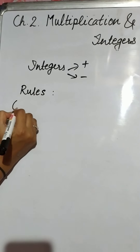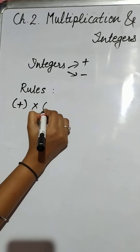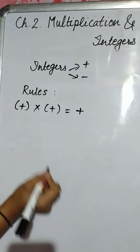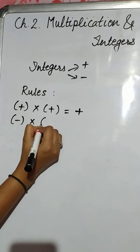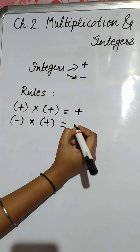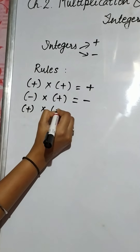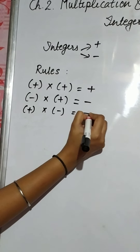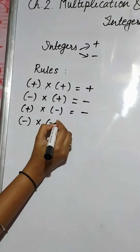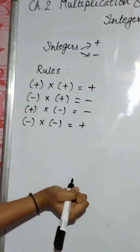So the rules are: when one positive number gets multiplied with another positive number, it gives a positive product. When one negative number gets multiplied with a positive number, it gives a negative product. When a positive number gets multiplied with a negative number, it gives a negative product. And when both negative numbers get multiplied with each other, it gives a positive product.